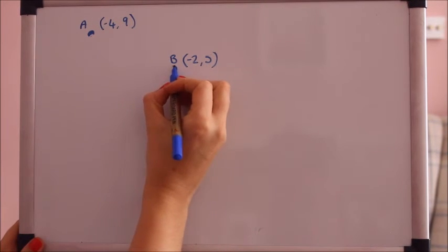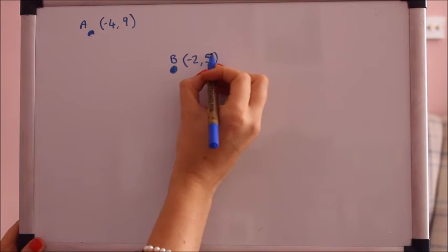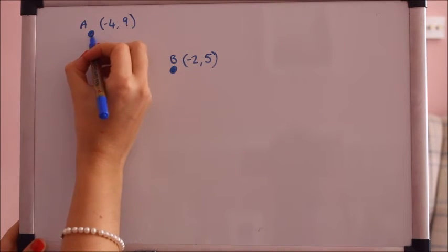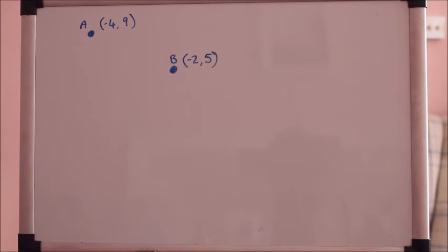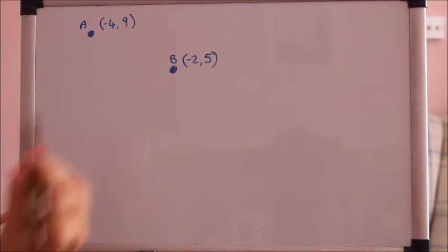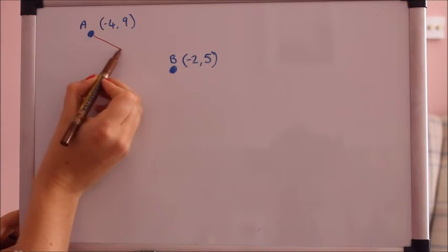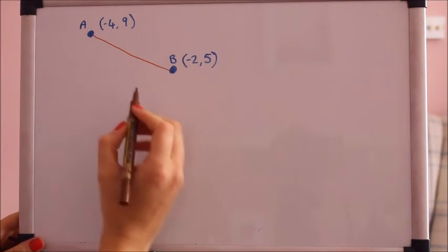Okay the last thing I want to do, slightly more complicated but will be okay, and that is to find the equation of the perpendicular bisector between A and B. Now perpendicular you might already know means that if you take this gradient here which we worked out was minus 2.